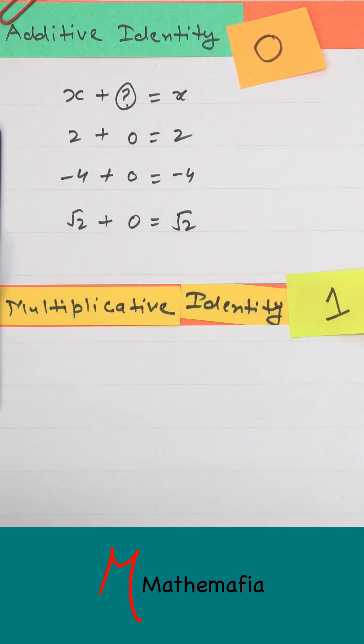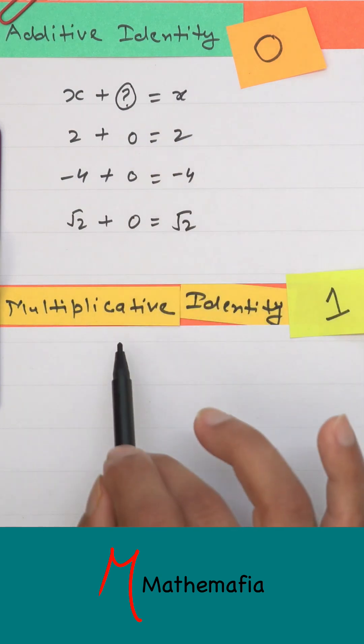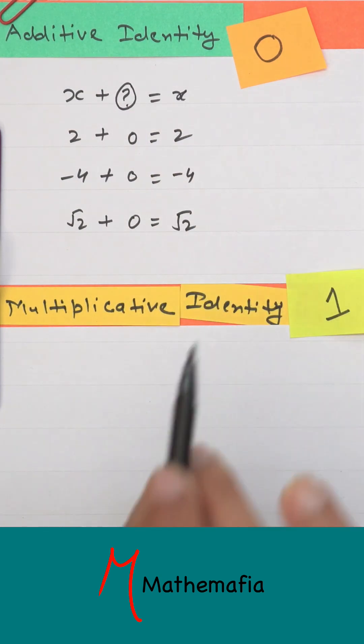Let's now talk about multiplicative identity. The concept of multiplicative identity is the same as additive identity. For addition, 0 is the additive identity. Similarly, 1 is the multiplicative identity.